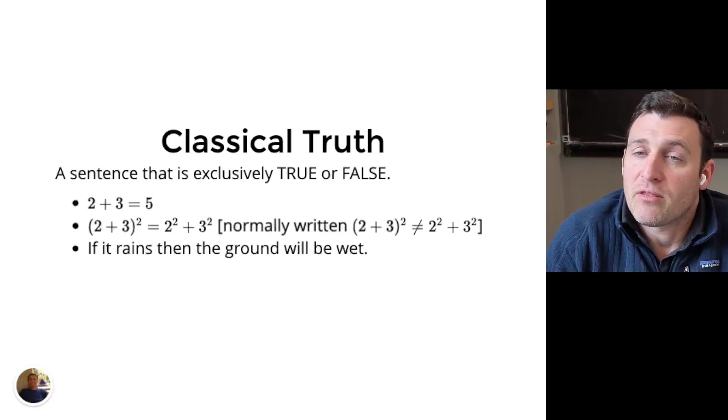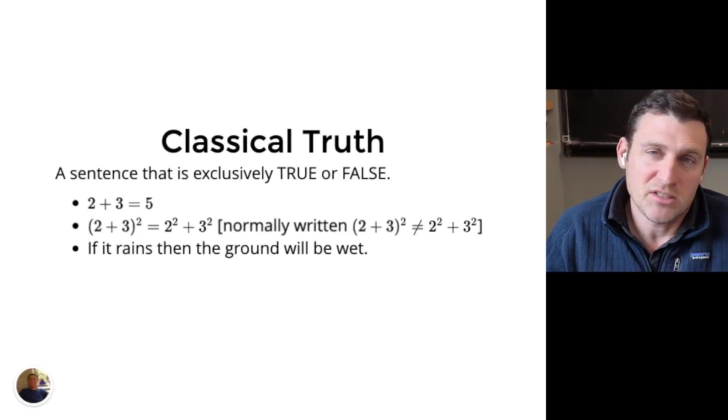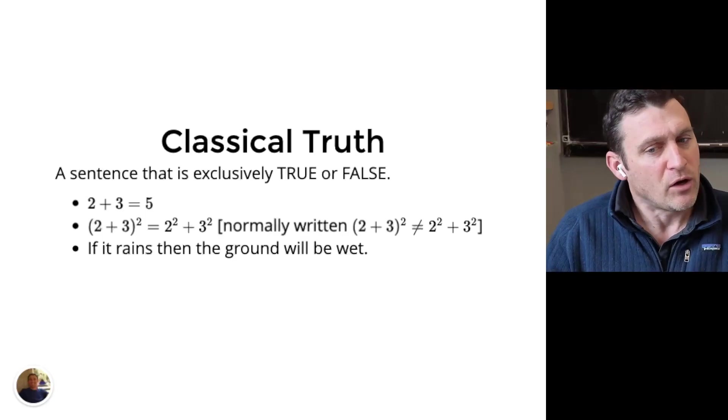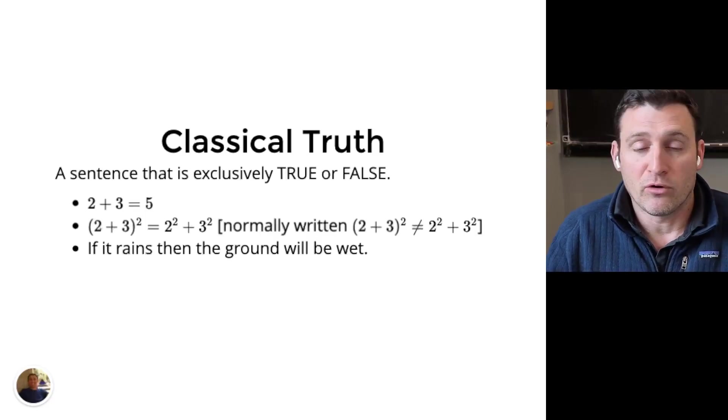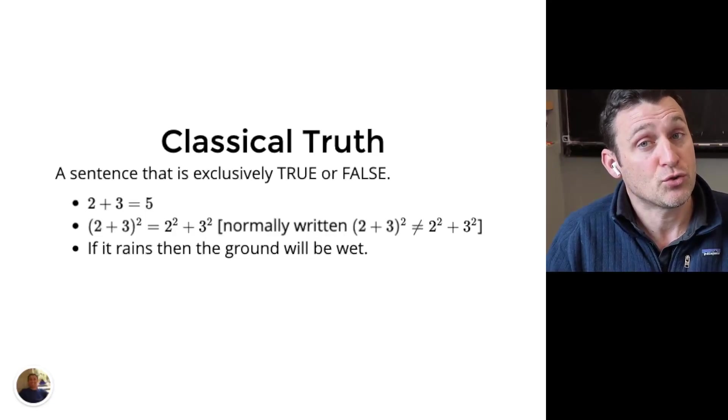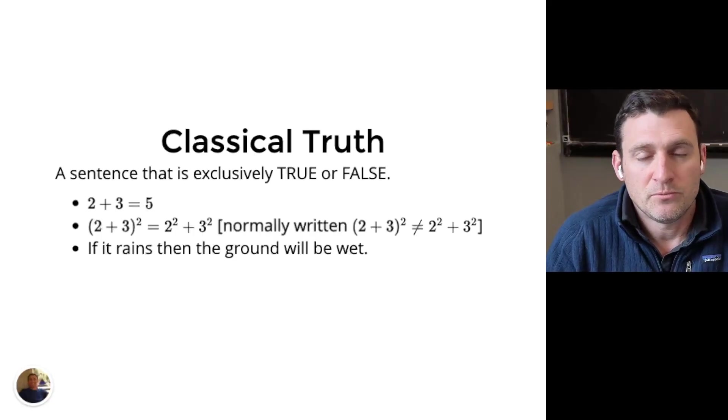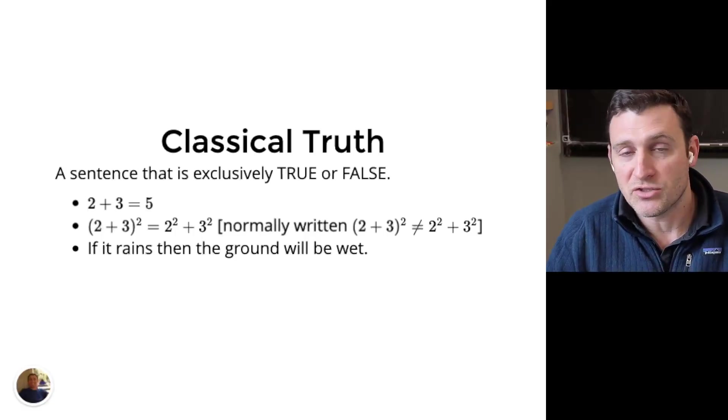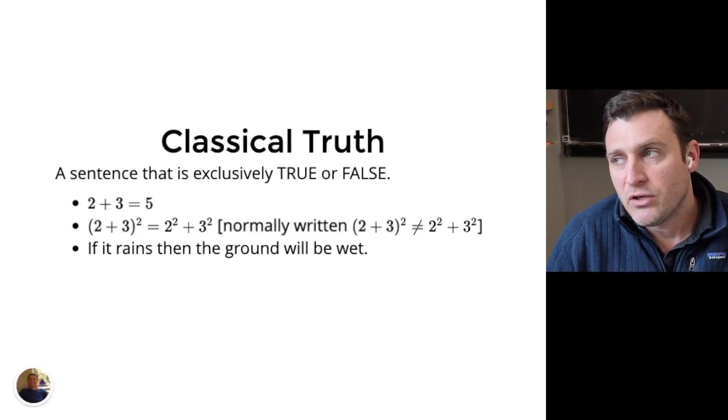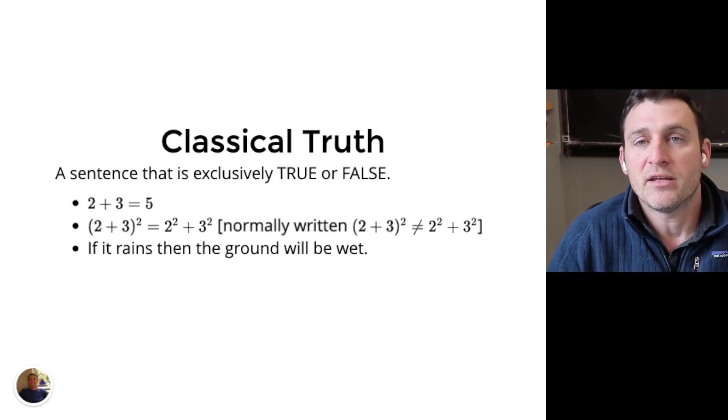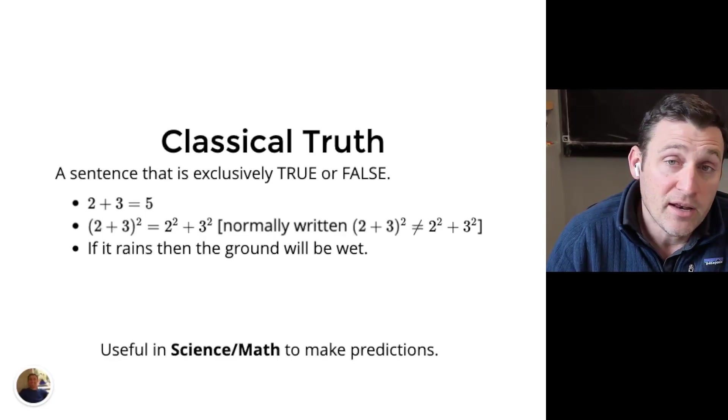These two expressions are saying the same thing, but one of them is true and one of them is false. We can also have words and often in mathematics, especially as we start to blend it with data science and computation, we'll have to start to think about story problems instead of formulas. Let's read this sentence and then see if it's something we might judge as true or false. If it rains, then the ground will be wet. This is a statement that we can judge as true.